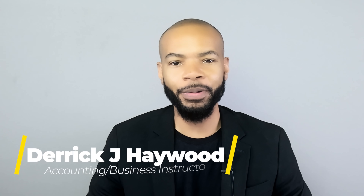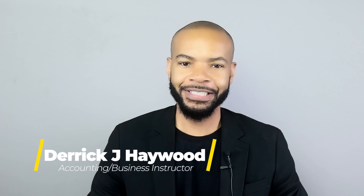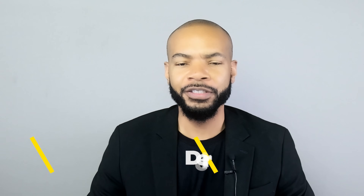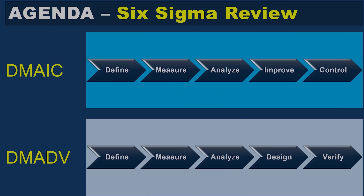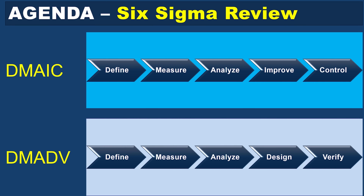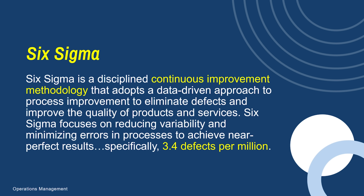Let's talk about continuous improvement. In this video I will discuss the Six Sigma methodology. So what is Six Sigma? It is simply a continuous improvement methodology that relates to a company or firm's ability to produce error-free products, specifically 3.4 defects per million.